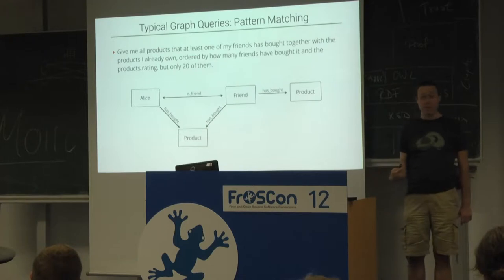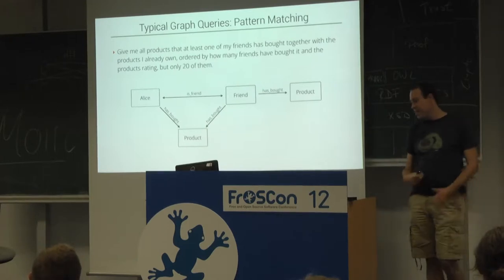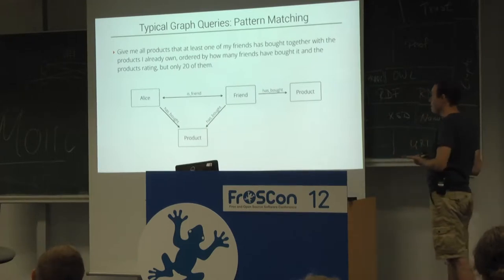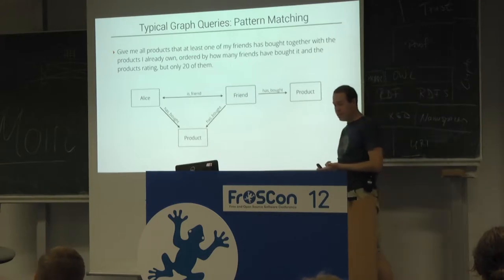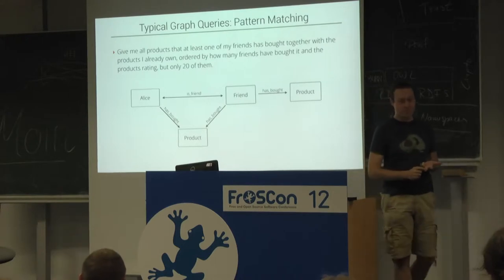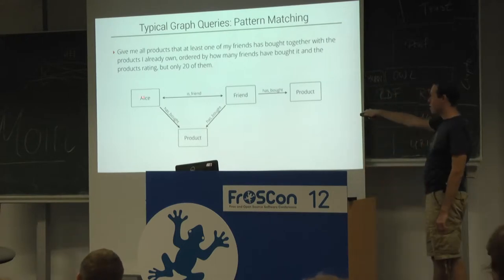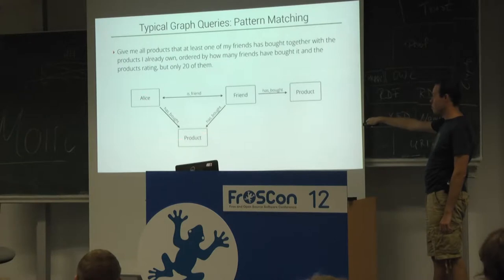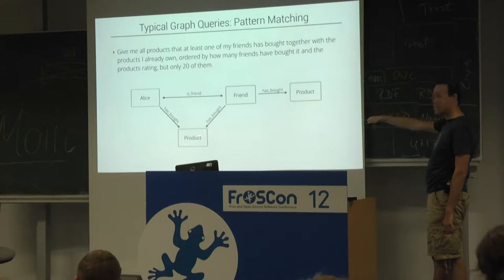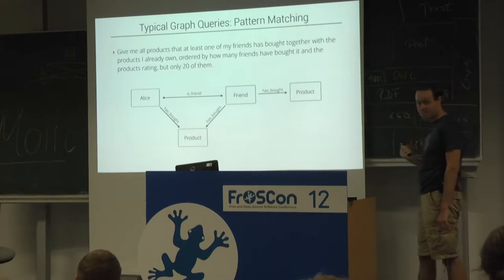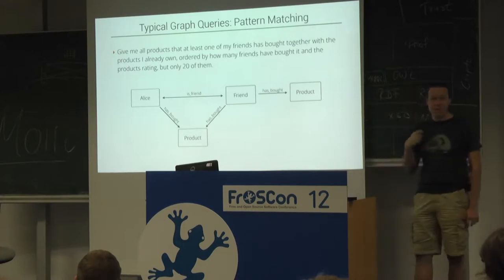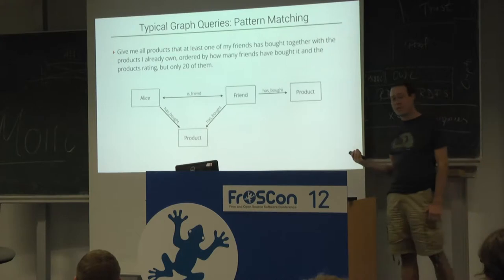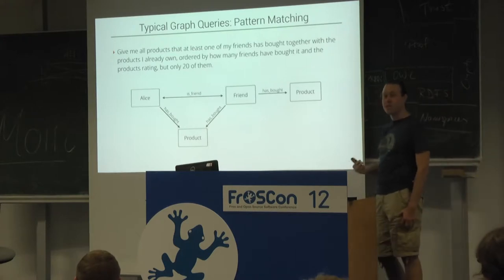And of course we can make it extremely complicated: give me all the products that at least one of my friends has bought together with a product that I already own. So we need to find someone that is a direct friend to Alice who has bought the same product and has bought something else which Alice does not have a relation to — because this product most likely is useful for Alice, so we would like to recommend it to her.